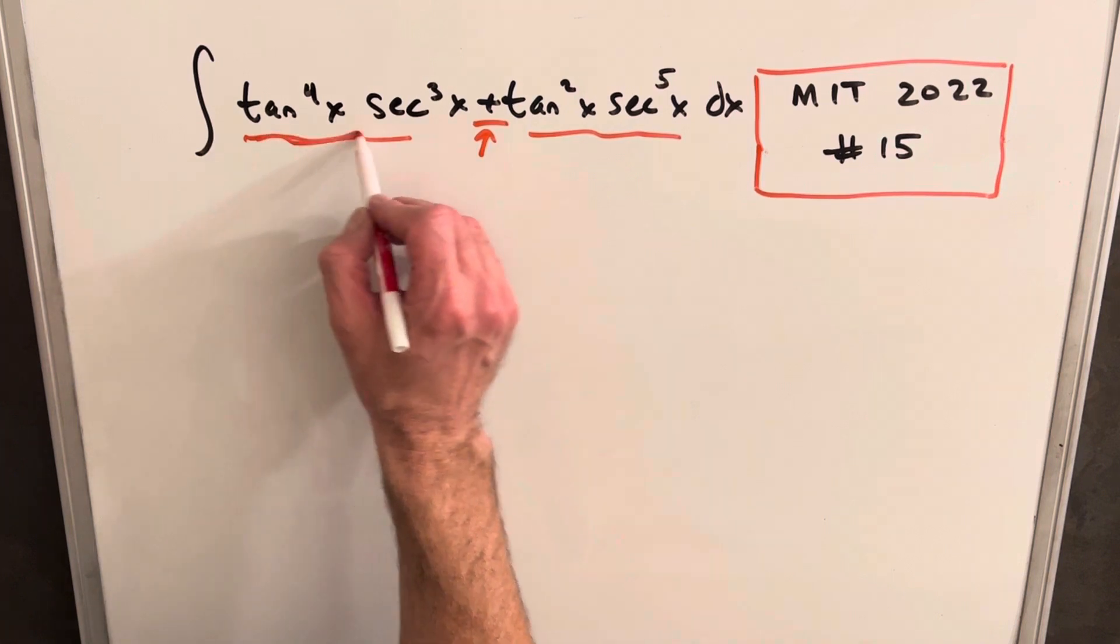A couple things that I'm noticing, the big one is that we have addition. So when there's addition, that's an indicator they might just want you to split it into two integrals, but it might also be the reverse of the product rule. And then another thing I'm looking at is how similar the functions are on both sides of the addition. There's definitely a certain similarity here. So again, I'm thinking the product rule.